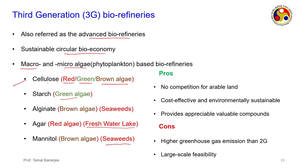The products from algae include cellulose, starch (a polysaccharide), alginate — precursors for alginic acid from brown algae — agar (another polysaccharide), and mannitol, which has medicinal value as a diuretic. These different compounds can be formed from red, green, or brown algae.